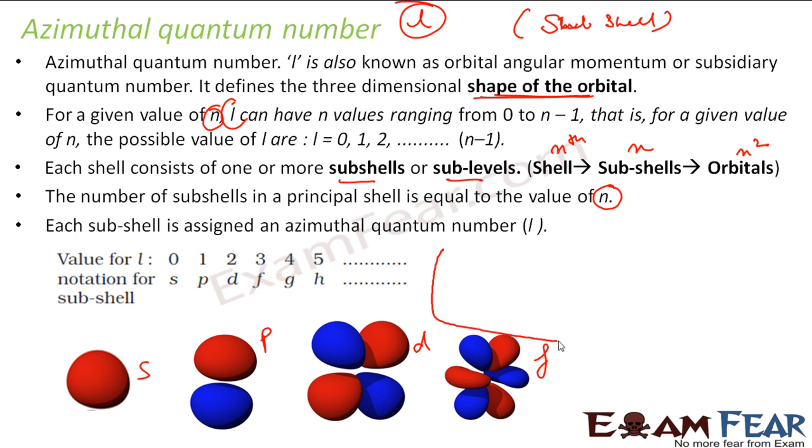So if you see how it works is, if I take n is equal to 1, my L is L. L can have value 0 only.